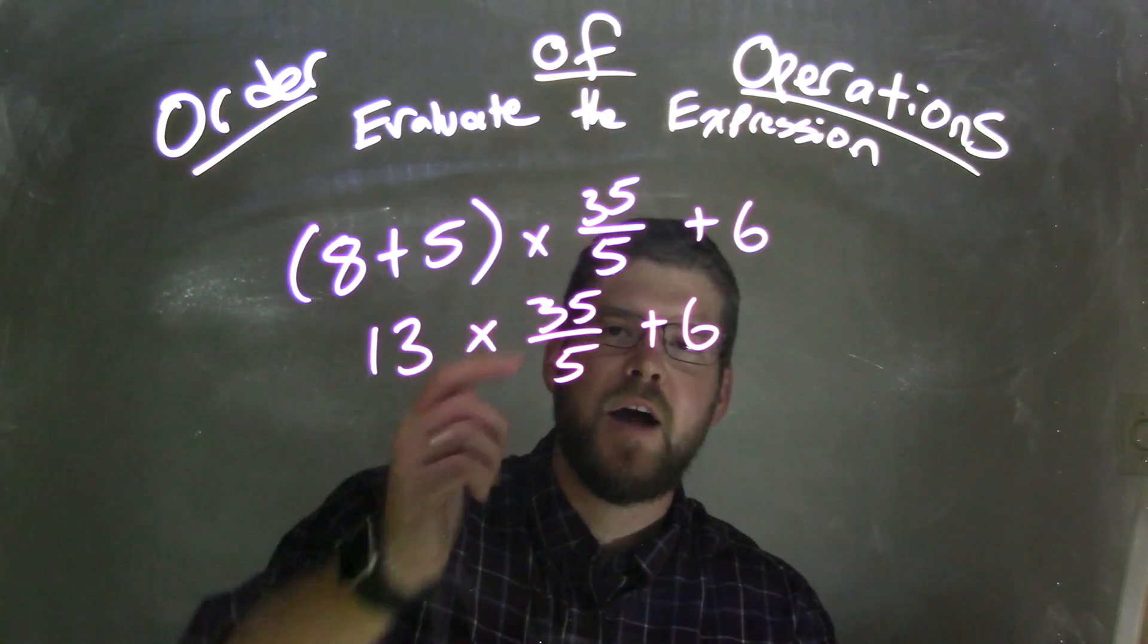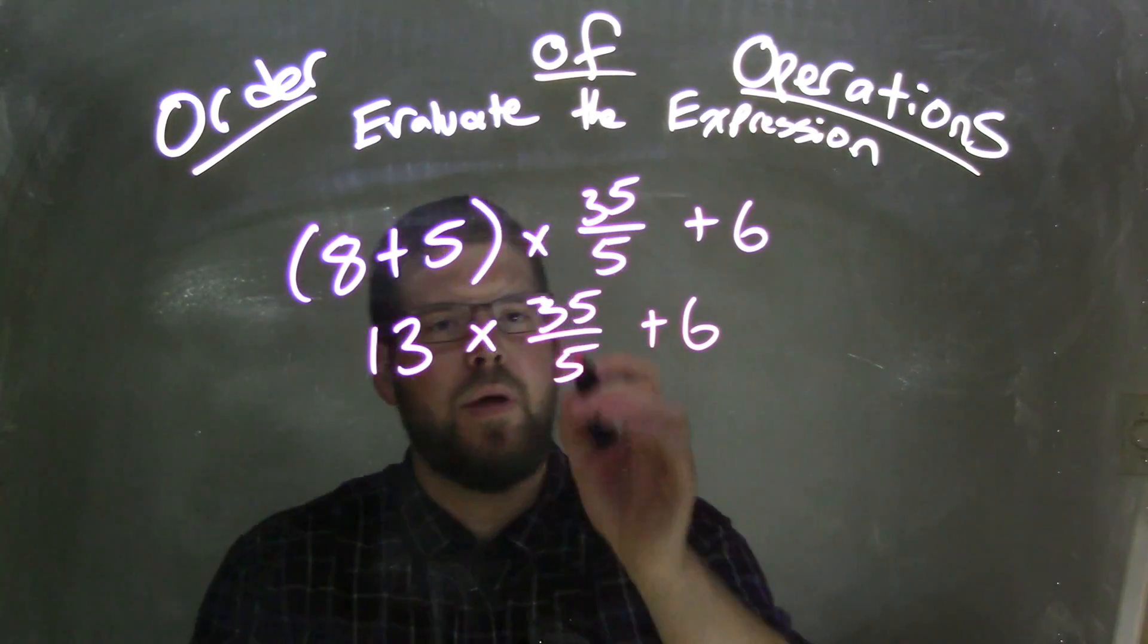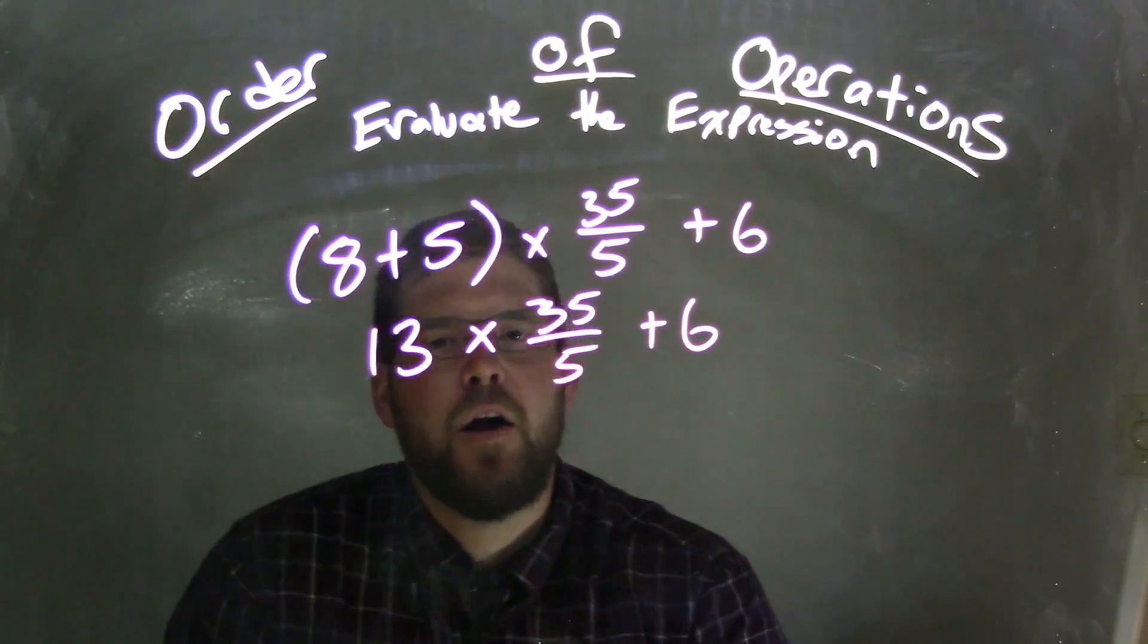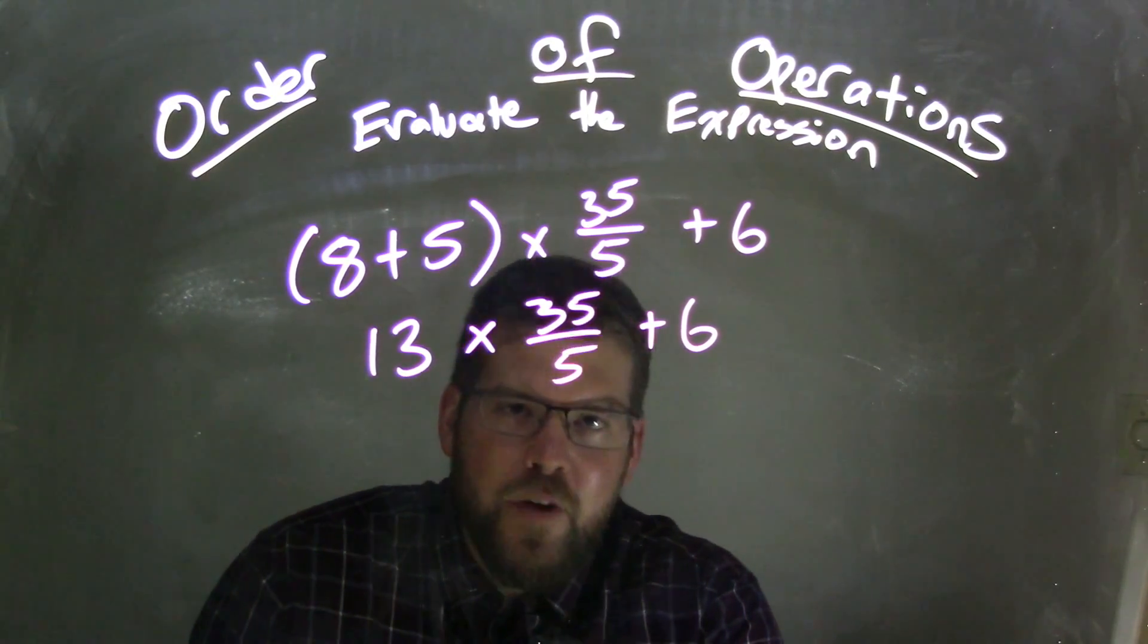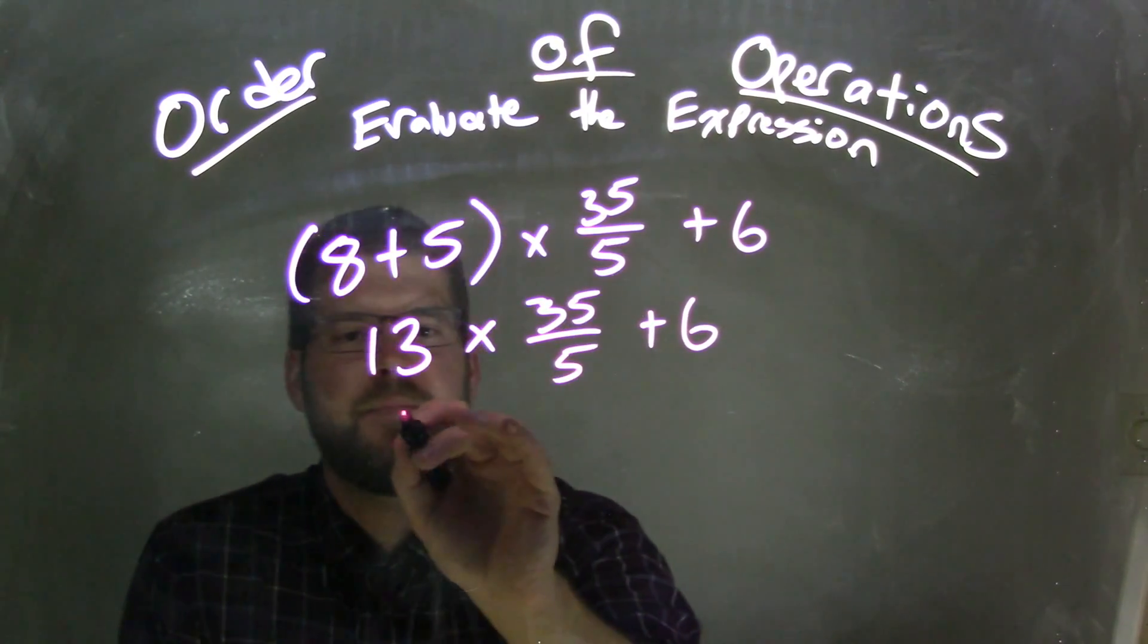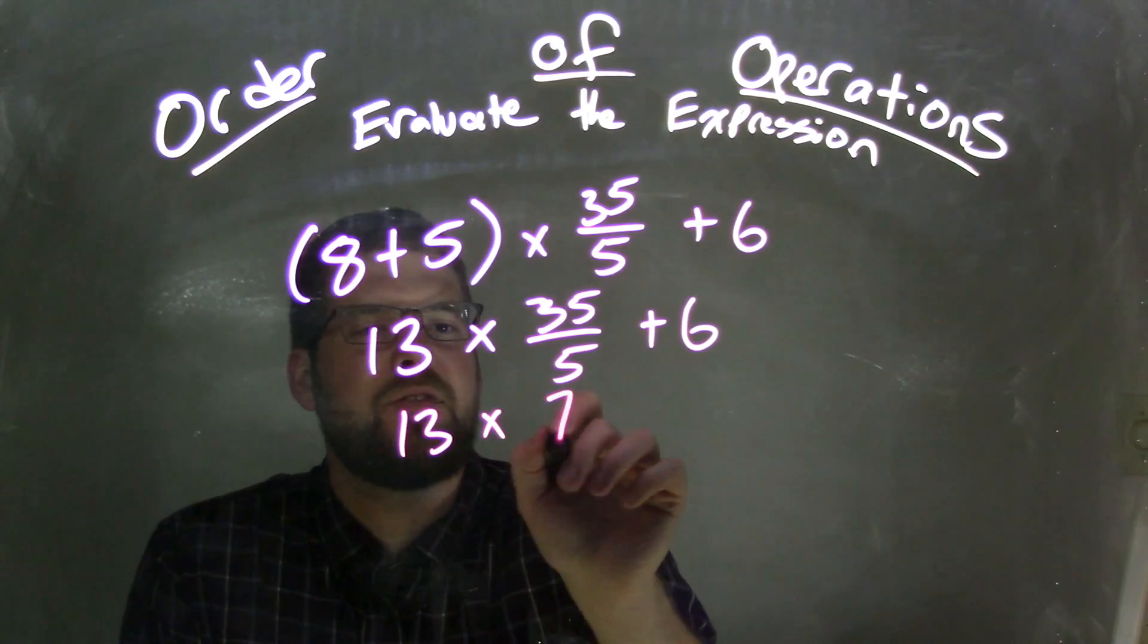So now we have that 35 over 5. It's almost like its own little parentheses, and we should simplify that first. All right, so 35 divided by 5 comes out to be 7. So we have 13 times 7 plus 6.